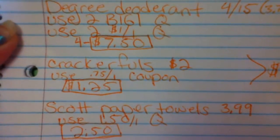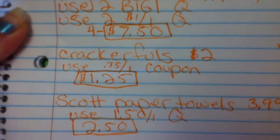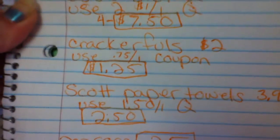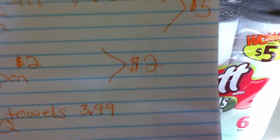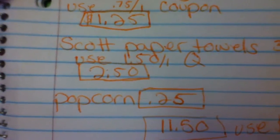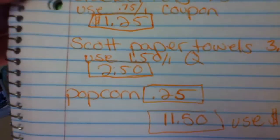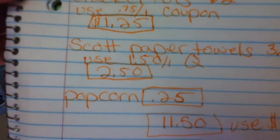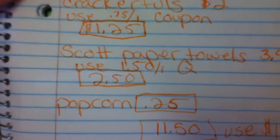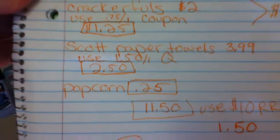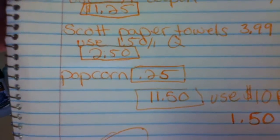And then the Cracker Foils, $2. Use the $0.75 off of one coupon. Brings it to $1.25, and you get $2 register rewards. Scott Paper Towels, $3.99. Use $1.50 off of one coupon. I use a lot of abbreviations. You get it for $2.50. The popcorn was $0.25. That was my filler item.